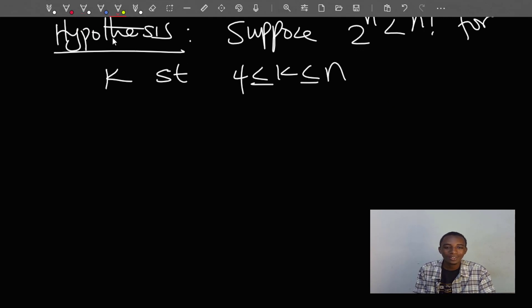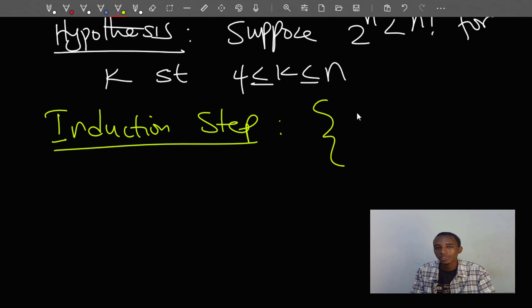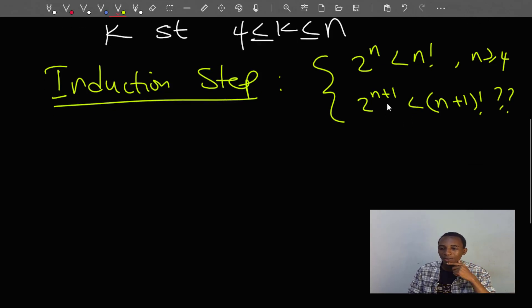So that brings us to the last step, which is the induction step. And basically what we will do for the induction step: we know that 2 to the power n is less than n factorial for n greater than or equal to 4. But we don't know if 2 to the power n plus 1 is also less than n plus 1 factorial. That's basically what we have to prove. Let me begin with what we want to prove.